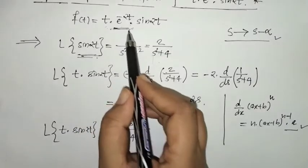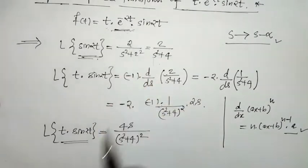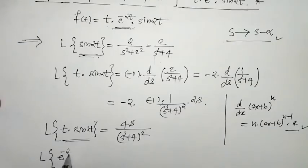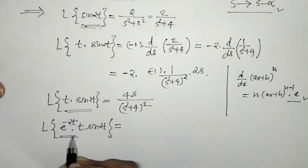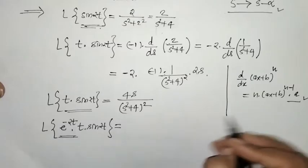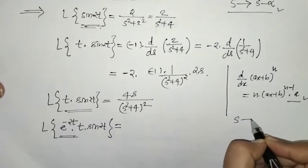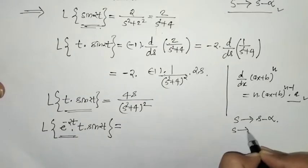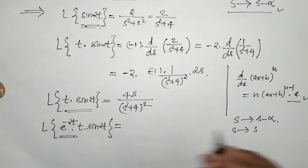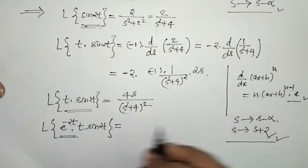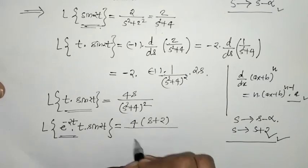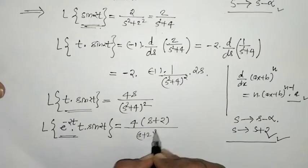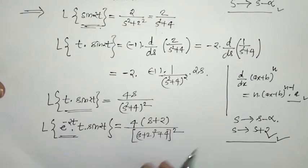Then we have to multiply this given function by e^(-2t). So here we have e^(-2t) · t · sin(2t). By the first shifting property, we have to shift s by s minus alpha, and here alpha is minus 2, so s gets replaced by s + 2. So what is the Laplace? This is 4(s+2) upon (s+2)² + 4, whole square.